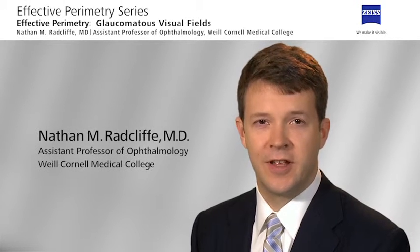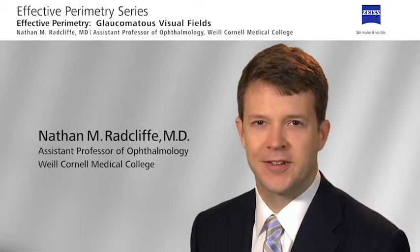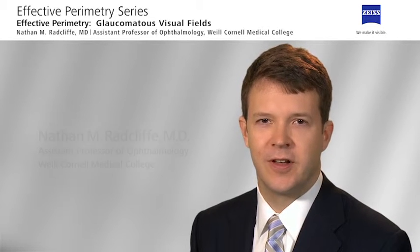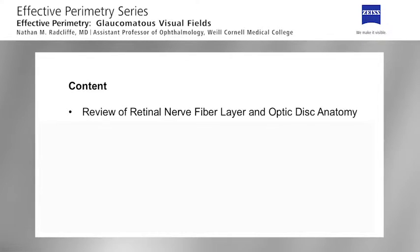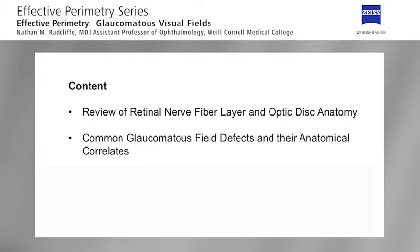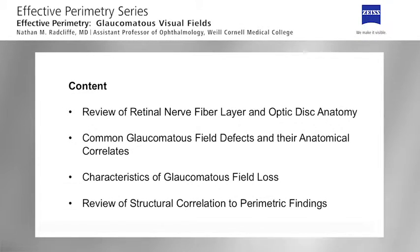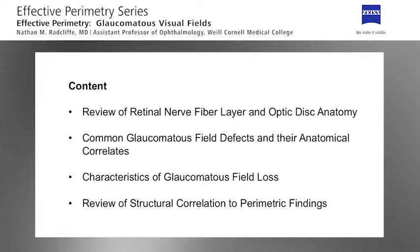Hi, I'm Dr. Nathan Radcliffe from Weill Cornell Medical College and today we're going to talk about perimetry and its role in assessing glaucomatous field loss. We'll review retinal nerve fiber layer and optic disc anatomy, common glaucomatous field defects and their anatomical correlates, characteristics of glaucomatous field loss, and we'll touch upon balancing perimetric results from the Humphrey Field Analyzer with structural analysis as well.